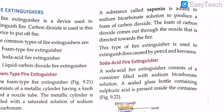Just for revision: there is a knob, there is a nozzle tube, and the metallic cylinder is filled with a saturated solution of sodium bicarbonate. Inside the metallic cylinder, there is a glass bottle of aluminium sulphate. When fire occurs, the knob is broken, the glass bottle breaks, and the aluminium sulphate reacts with sodium bicarbonate — NaHCO3 + Al2(SO4)3 — giving aluminium hydroxide, sodium sulphate, and carbon dioxide. A substance called saponin creates a foam-like substance, and this extinguisher is used for kerosene, petrol, and diesel fires.